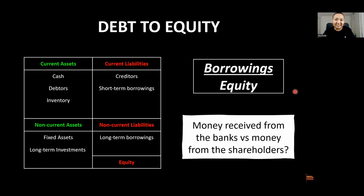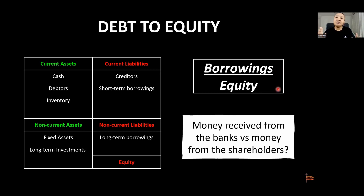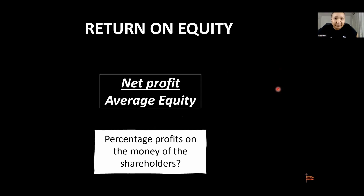Now the last balance sheet ratio: debt to equity. It's the shareholders' money versus the money from the banks. We don't want our companies getting more money from the banks than from shareholders. If you have debt of 100 and equity of 200, that gives you a 50% debt-to-equity ratio — that's a very safe number.